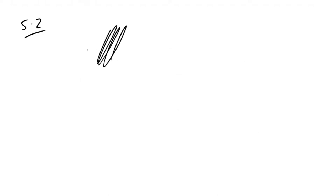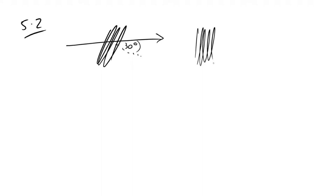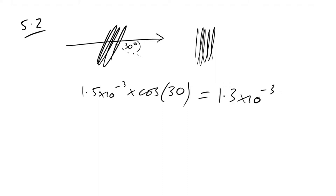We're asked to find the flux linkage at 30 degrees. We already have the maximum flux linkage, so we just multiply by cos30°: 1.5×10⁻³ × cos30° = 1.3×10⁻³ Wb-turns.